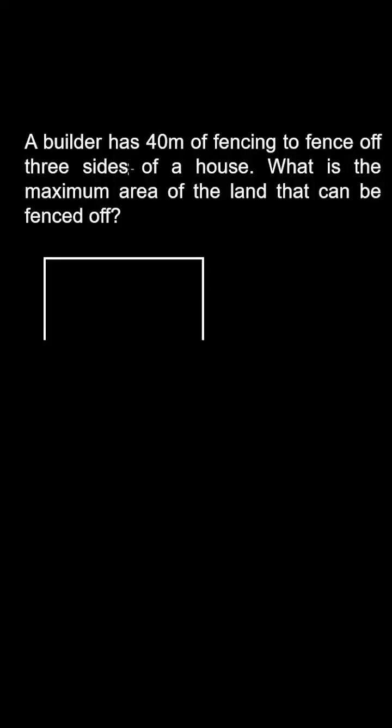A builder has 40 metres of fencing to fence off three sides of a house. And what is the maximum area of the land that can be fenced off?